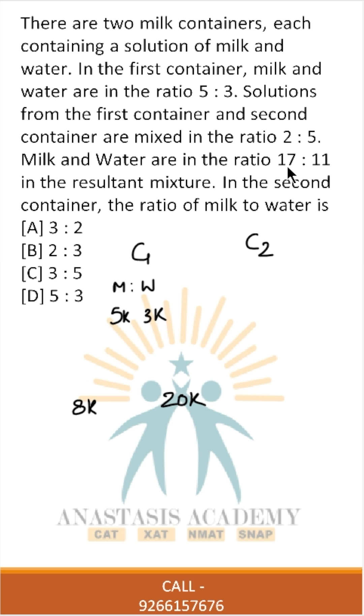Milk and water are in the ratio 17 is to 11 in the resultant mixture. See this wonderful thing. These 2 add up to 28k, which is now being told to us. Milk is 17k, water is 11k.